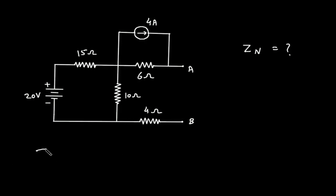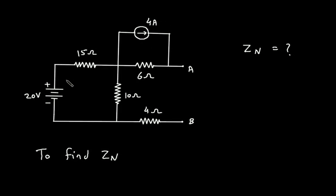Now to find Zn, we have to turn off all the independent sources. So we have to turn off this independent current source — when we turn off an independent current source, it will be open circuited. We also have to turn off this independent voltage source — when we turn off an independent voltage source, it will be short circuited.